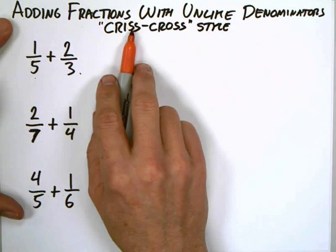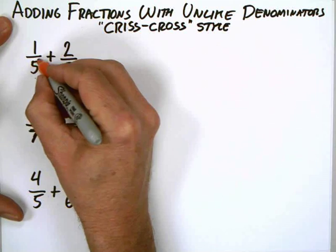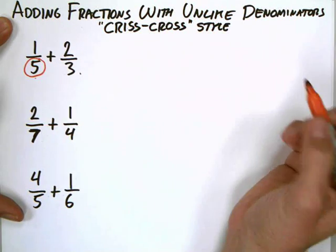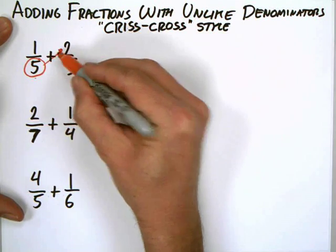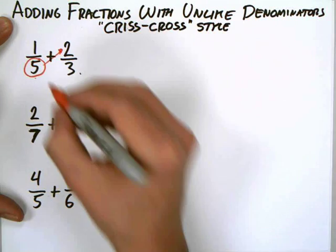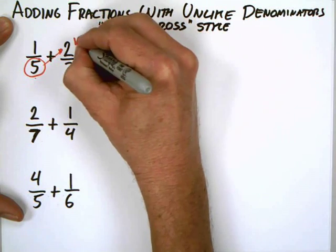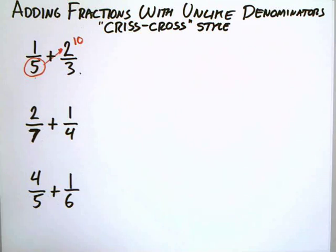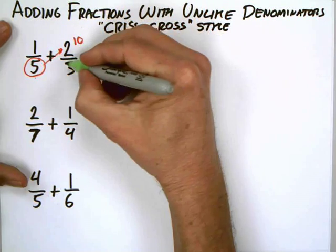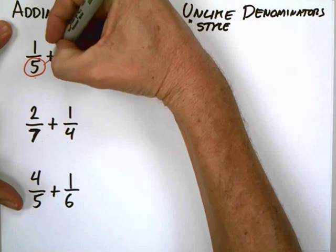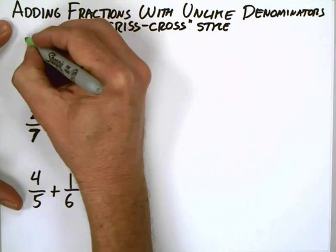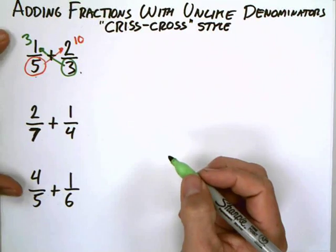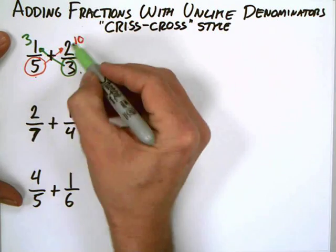So here's how crisscross style works. To do crisscross style, I'm going to use the denominator of this first fraction, and I'm going to multiply it by the numerator of the second. So 5 times 2 is worth 10. Then I'm going to take the denominator of the second fraction, and I'm going to multiply it by the numerator of the first. It's going to be a 3. So for crisscross style, I'm going to have 3 plus 10.